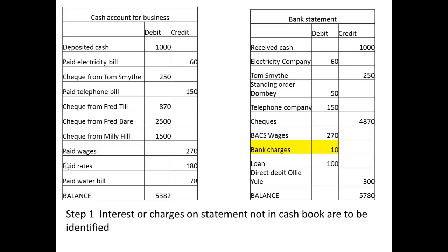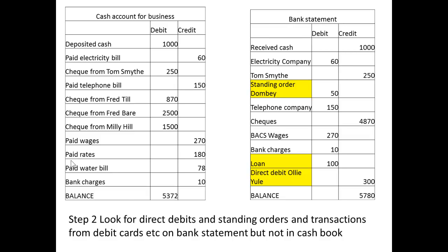Here we have a cash account for a business and a bank statement that they've received. Step one is to look for interest or other charges on the statement which are not in the cash book. We can identify a bank charge of £10, and we add that bank charge — recording it now in the cash account for the business.